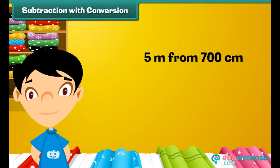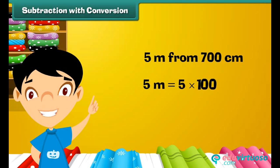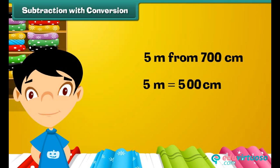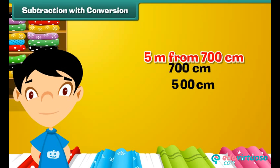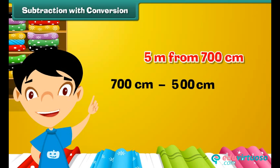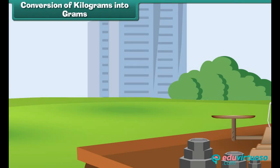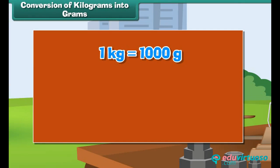Which equals 700 centimeters. Subtraction with conversion: Let us now move on to subtraction. Let us subtract 5 meters from 700 centimeters. 5 meters equals 5 into 100, which is 500 centimeters. So 700 centimeters minus 5 meters equals 700 centimeters minus 500 centimeters, which equals 200 centimeters.